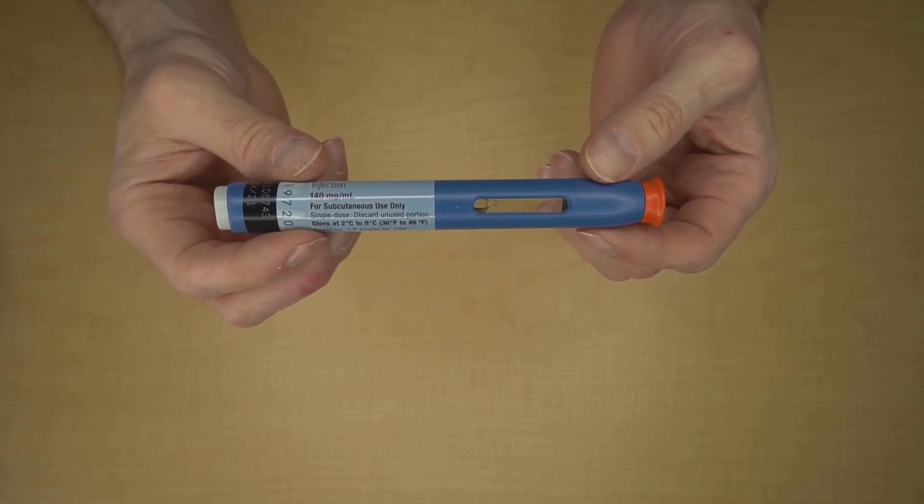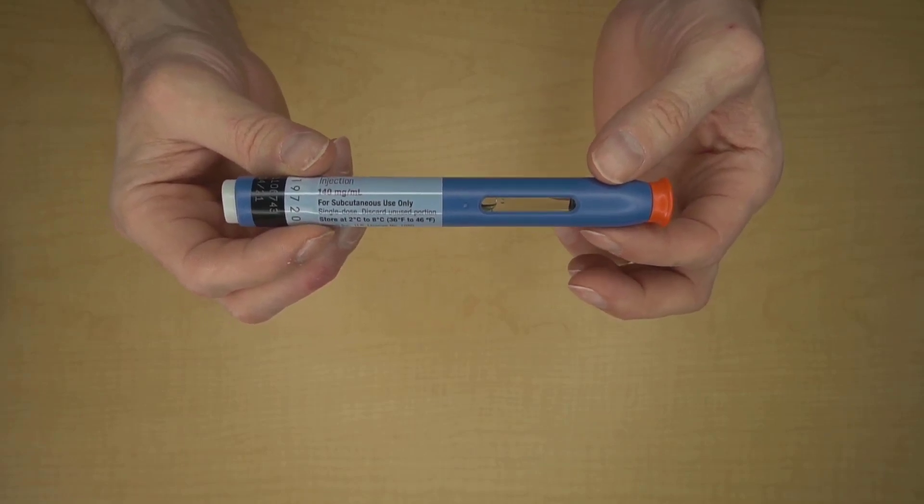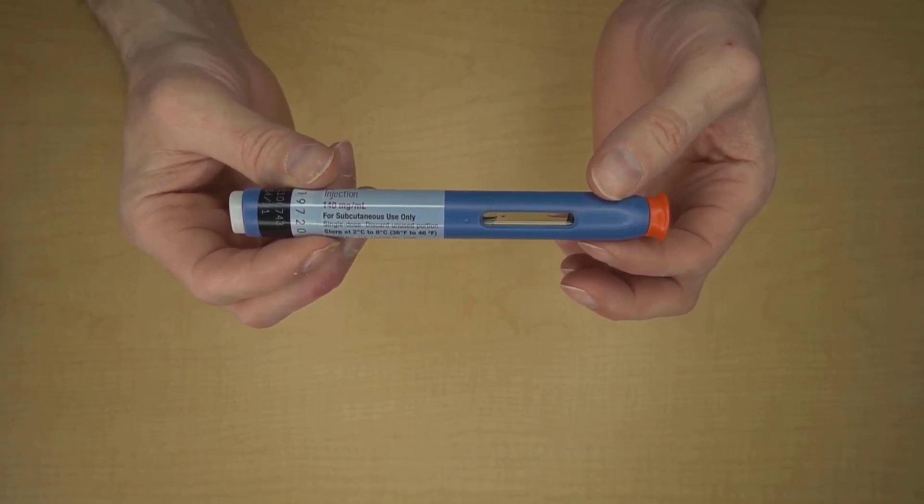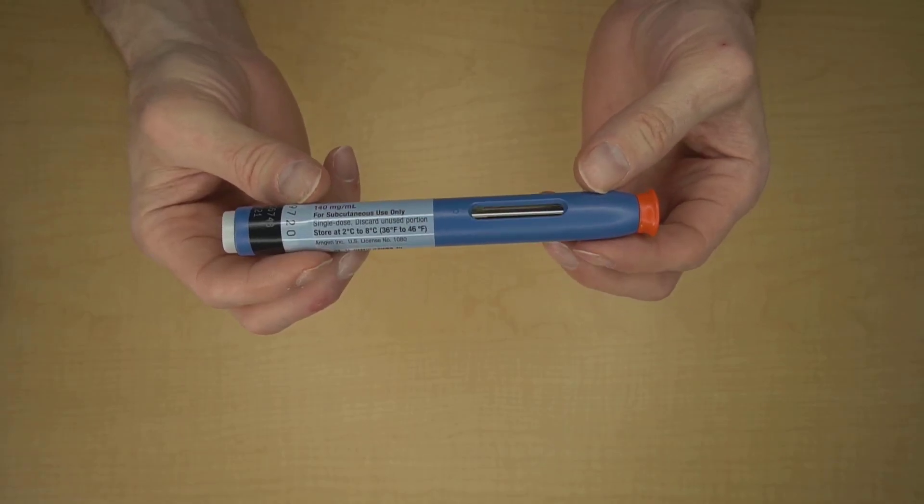If your Amovig auto-injector doesn't look like this, don't use it. Use a different one and just call your doctor or call Amgen, and they should be able to arrange a replacement.